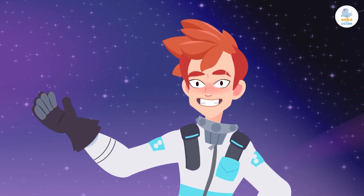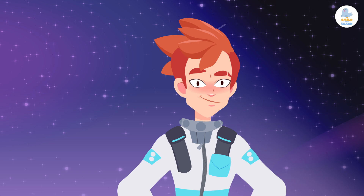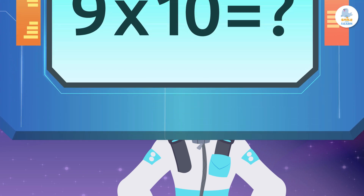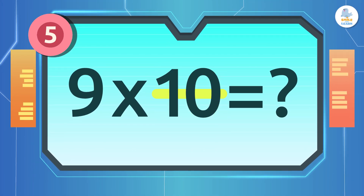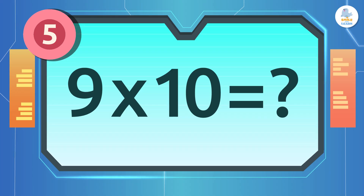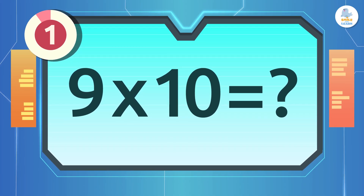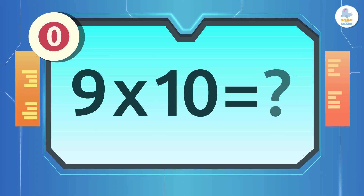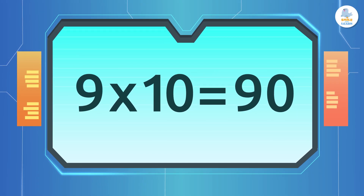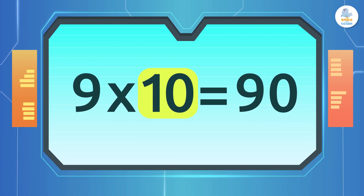Now who wants to try it? Let's practice together. What is nine times ten? Great — 90! First we put the nine and add one zero because we are multiplying by ten.